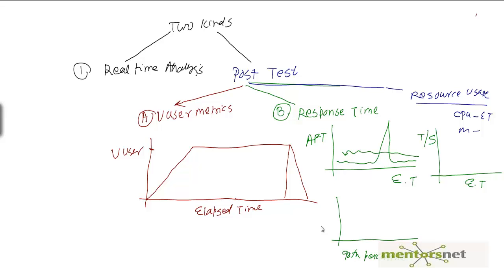Hello, welcome back. In the last video we discussed the importance of analysis and we saw there are three kinds of post-test analysis that we can do: vuser matrix, response time, and resource usage. These are the three minimum default analyses you can do using LoadRunner Analyzer. However, you can add more analysis, which you are going to see at the very end of this chapter.